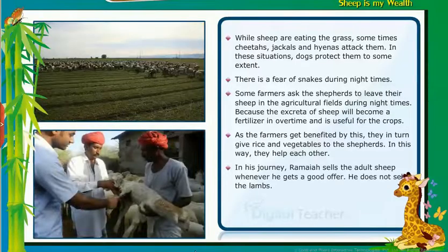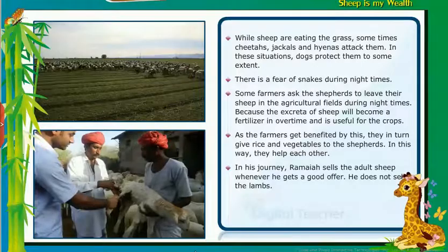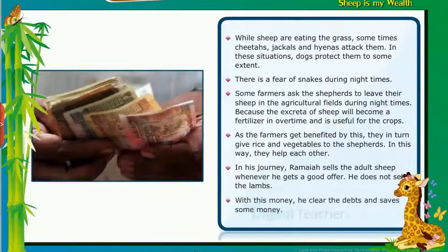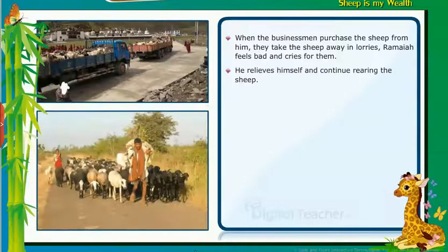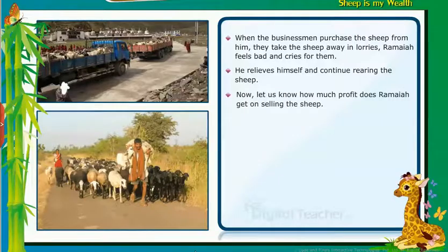In his journey, Ramaya sells adult sheep whenever he gets a good offer. He does not sell the lambs. With this money, he clears his debts and saves some money. When businessmen purchase the sheep, they take them away in lorries. Ramaya feels bad and cries for them. He relieves himself and continues rearing the sheep.